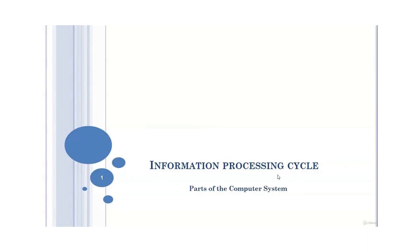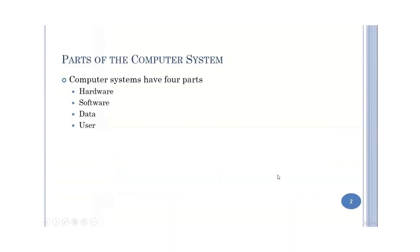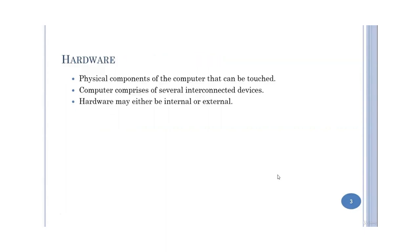In this lesson we will discuss the different parts of a computer system and we will also see what is an information processing cycle. A computer system has four main parts: number one hardware, number two software, number three data, and number four user. All the physical components of a computer that can be touched physically are called hardware.